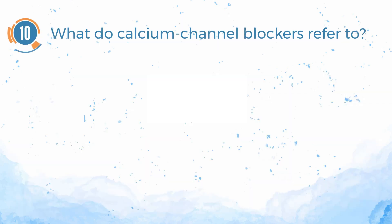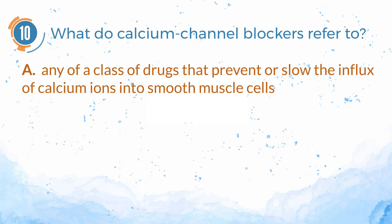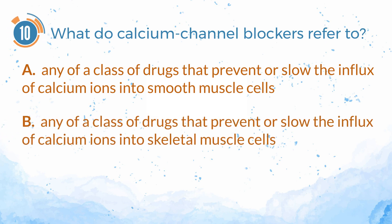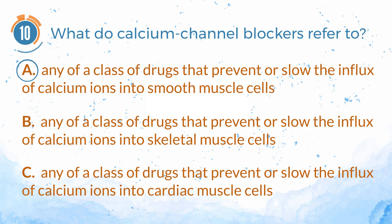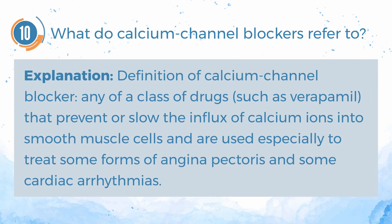Number 10. What do calcium channel blockers refer to? A. Any of a class of drugs that prevent or slow the influx of calcium ions into smooth muscle cells. B. Any of a class of drugs that prevent or slow the influx of calcium ions into skeletal muscle cells. C. Any of a class of drugs that prevent or slow the influx of calcium ions into cardiac muscle cells. The answer is A. Explanation: definition of calcium channel blocker — any of a class of drugs, such as verapamil, that prevent or slow the influx of calcium ions into smooth muscle cells, and are used especially to treat some forms of angina pectoris and some cardiac arrhythmias.